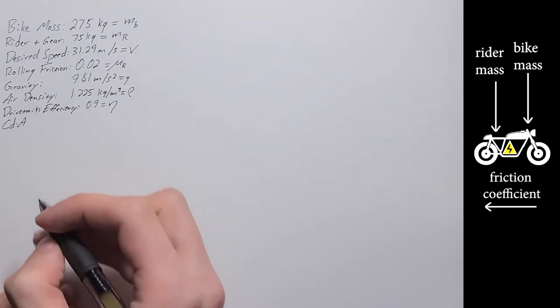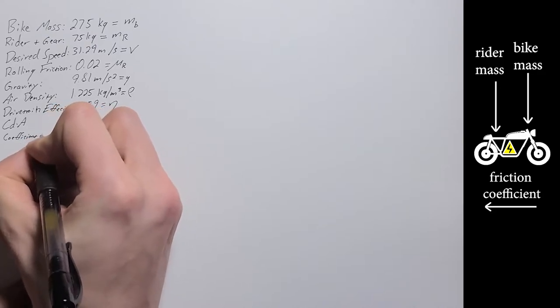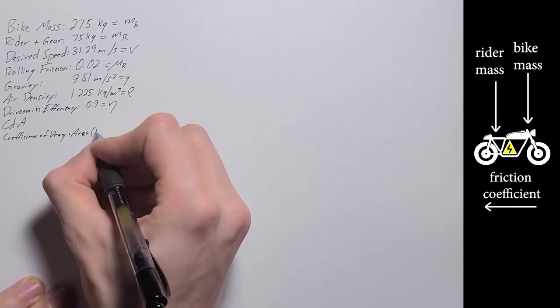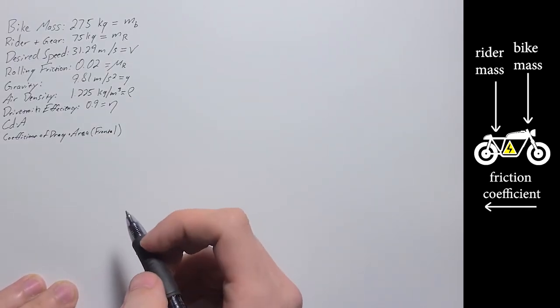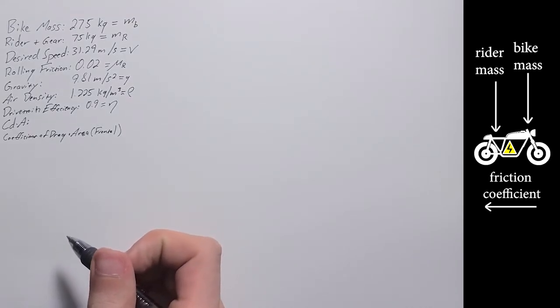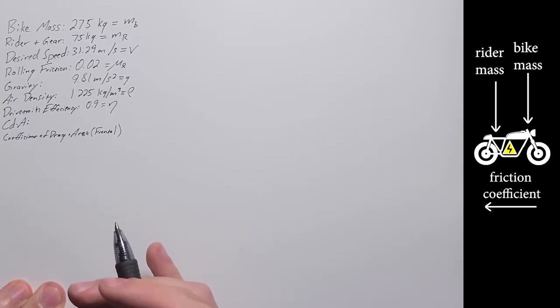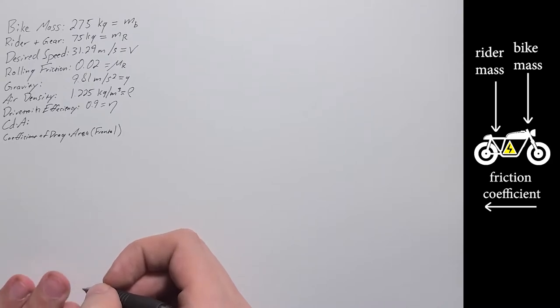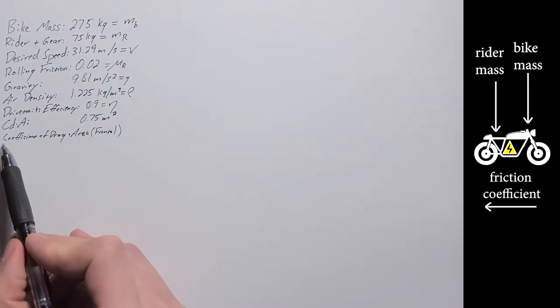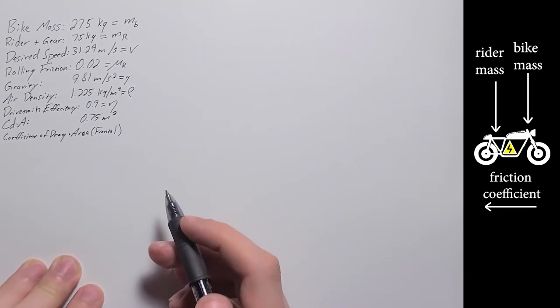And then last up, the one where I'm least sure about is a CD times A value, where this is the coefficient of drag. That's your CD times frontal area. So this is going to be your air resistance value. After a bit of poking around online, I found a resource that includes some typical values. So I'm ballparking it on the little higher side, just in case. So that's going to be 0.75. This is meters squared for area, and then coefficient is unitless.